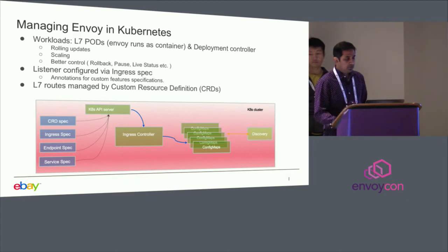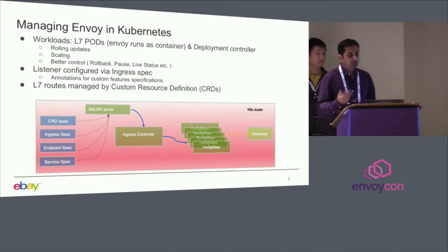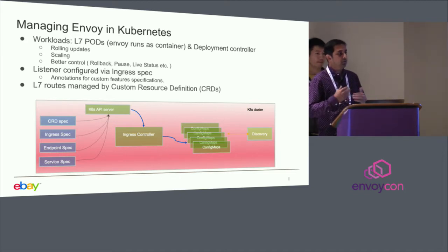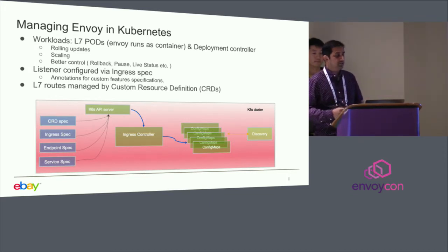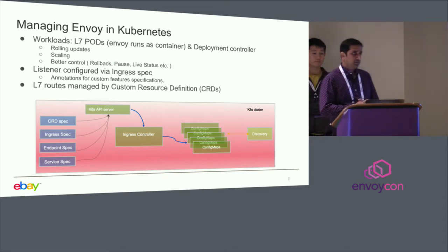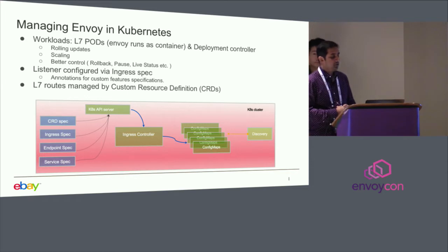We chose to go with the Deployment controller resource because of the advantages it provides. When running Envoy or any L7 proxy, you want to roll out new features and software upgrades often while still receiving live traffic. Kubernetes provides a rolling update strategy that lets you specify a threshold on the number of pods terminated, so you always have a set of pods running and receiving traffic — enabling in-service upgrades. Deployment controllers also give you flexibility to scale up and down, pause a rollout if it doesn't go as expected, or roll back. That's why we went with the Deployment controller.